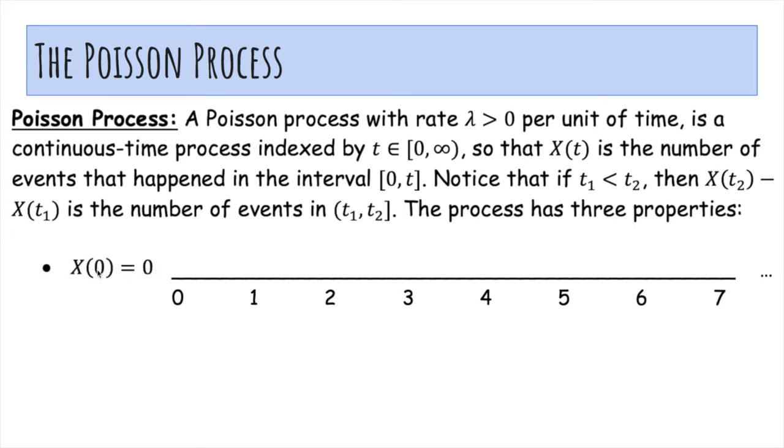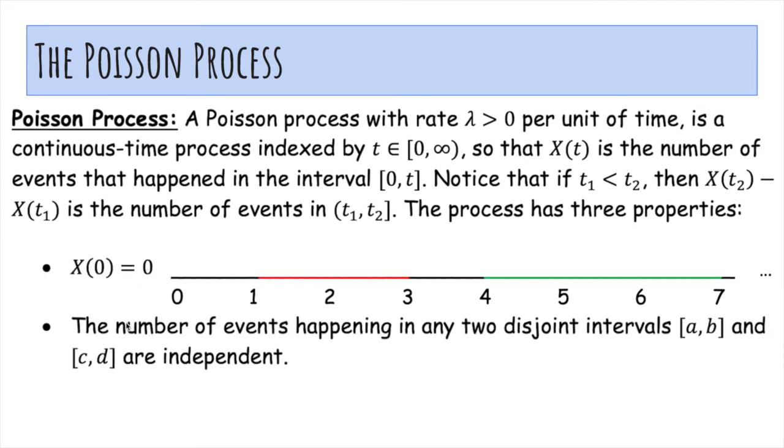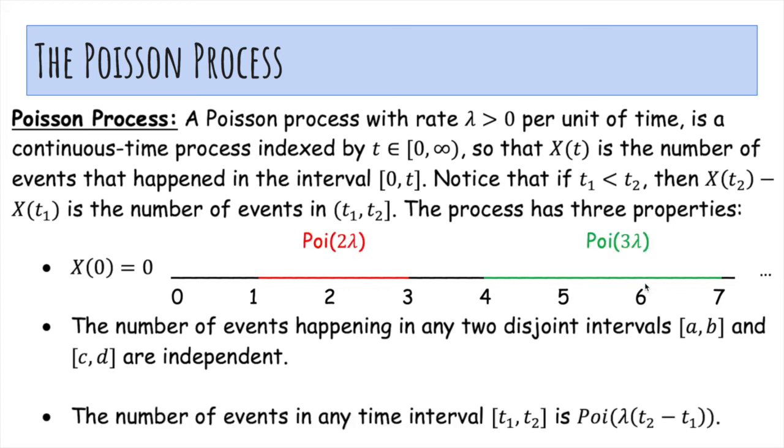X(0) is zero because at time zero, there's zero events. The number of events happening in any two disjoint intervals a and b and c and d are independent. So the number of events happening here and here are independent. And finally, the number of events in any time interval t1, t2 is Poisson with parameter lambda times (t2 minus t1). So if lambda events happen per one unit of time in two units of time, the average rate is two lambda. And so we would have a Poisson two lambda here, Poisson three lambda here.